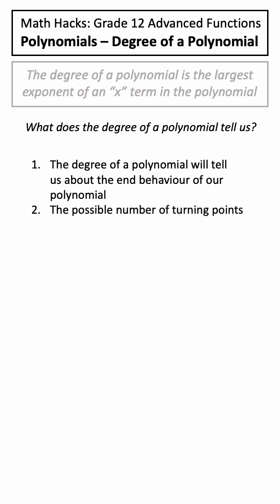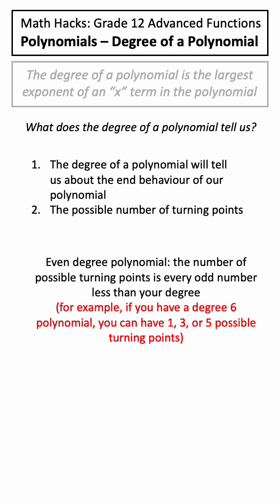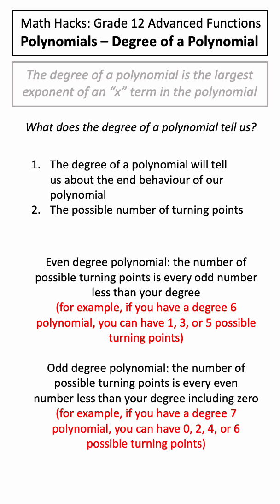The next thing the degree will tell us is the possible number of turning points. For an even degree polynomial, the number of turning points is every odd number less than your degree, and for an odd degree polynomial, the number of possible turning points is every even number less than your degree, including 0.